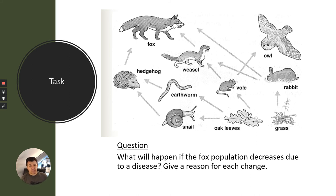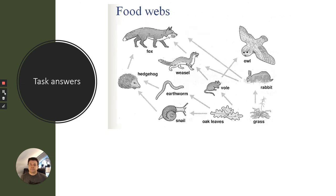Here's a quick task: what will happen if the fox population decreases due to a disease? Try to give a reason for each change. Look through the food web, decide on your answer, write it down, and then we'll go through it. Please pause the video now.